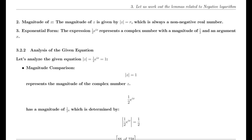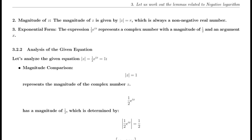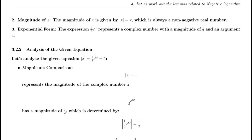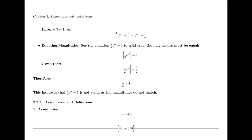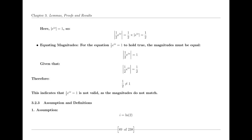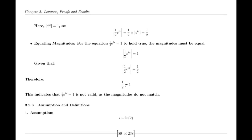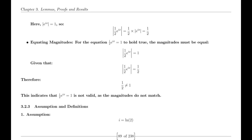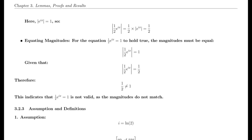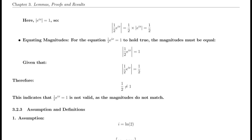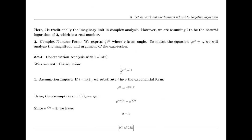For a function to be harmonic, it must be continuously differentiable within its domain. In complex analysis, a function of a complex variable is said to be analytic or holomorphic if it is differentiable at every point in its domain. The real and imaginary parts of an analytic function are harmonic functions, which brings us to the concept of harmonic conjugates. The Cauchy-Riemann equations provide the necessary and sufficient conditions for a function to be analytic, linking the partial derivatives of the real and imaginary parts of a complex function.